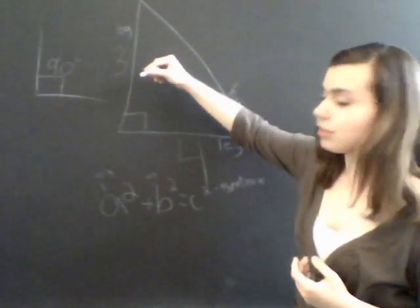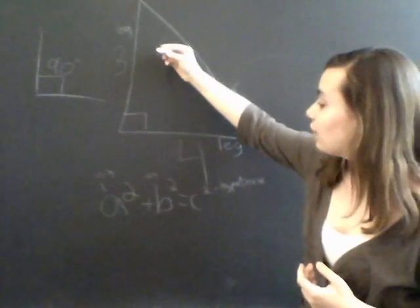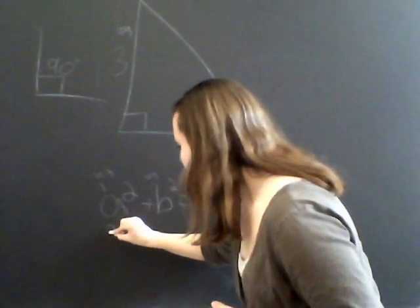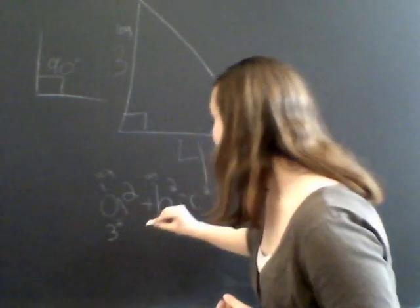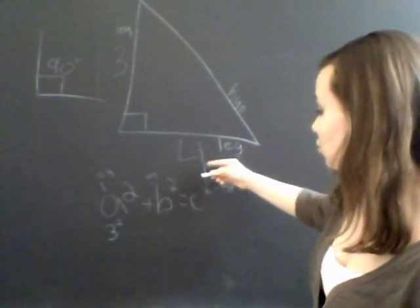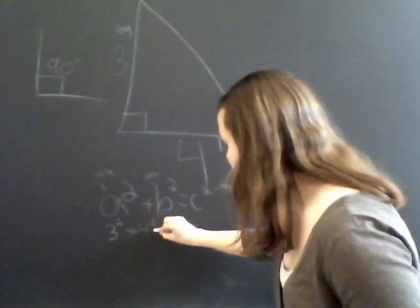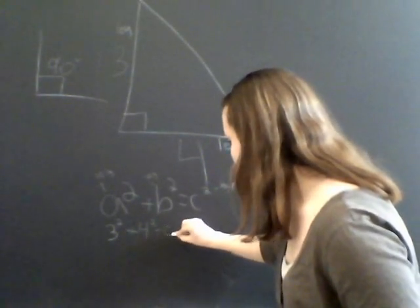So if the length, going back to this example, of one leg is three, then you plug it in for one of the length values. It doesn't matter which one. So three squared plus the other leg squared, which is four, equals C squared.